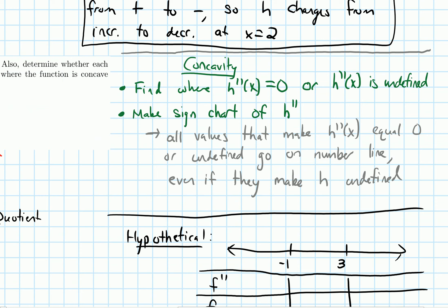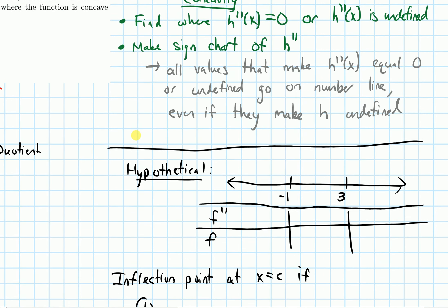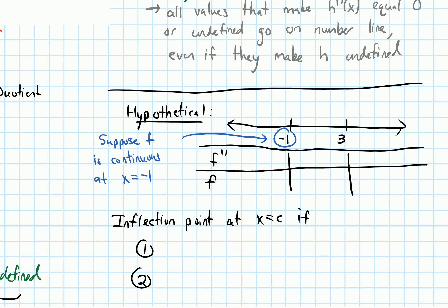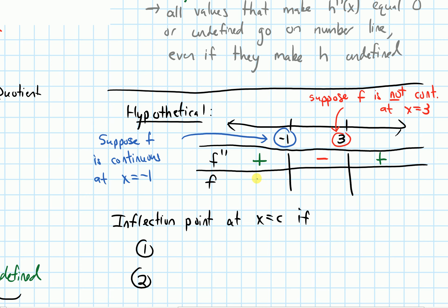Here's a hypothetical scenario. Suppose we have a number line for the second derivative where f is continuous at x equals negative one, but x equals three — even though it's on the number line — is a point where the original function is not continuous. Let's say the sign chart is positive, then negative in the middle, then positive. Where the second derivative is positive the function is concave up; where negative, concave down.